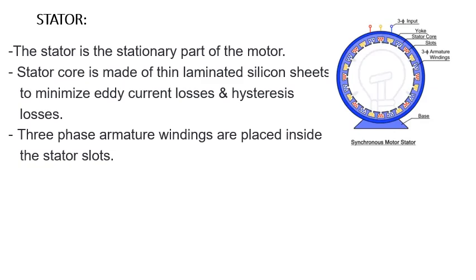Let us discuss the construction in detail. Stator and rotor are both major essential requirements for the construction of a synchronous motor. Here in this diagram you can see the stator of the synchronous motor. We are providing a three-phase supply input to the stator. The stator includes some components — the first is the yoke. The yoke is the external or outermost body of the motor. It provides mechanical support to the entire machine and carries the flux produced by the stator.